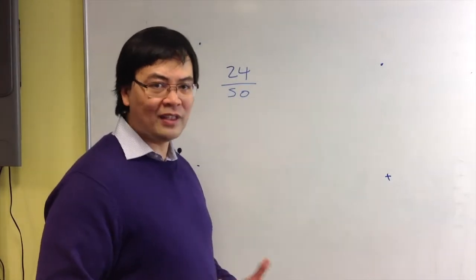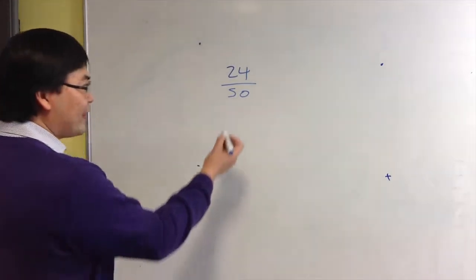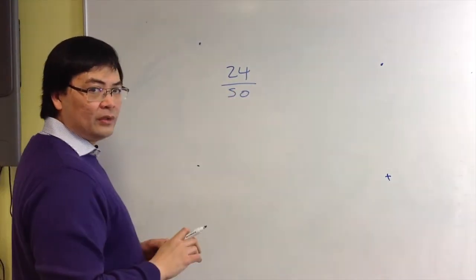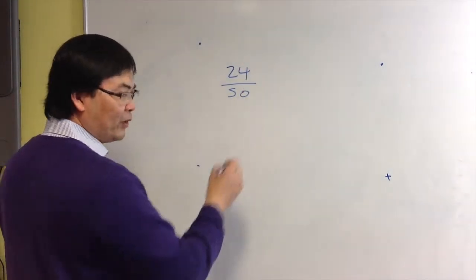Now we're going to express one number as a percentage of another number, and here's a fraction we've written down already. The top is called the numerator and the bottom is the denominator, or if you like, top and bottom.